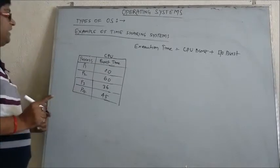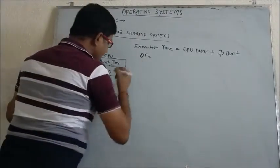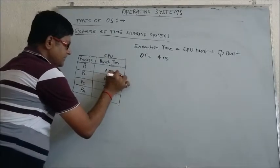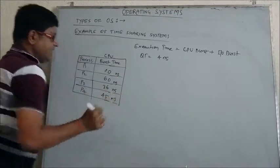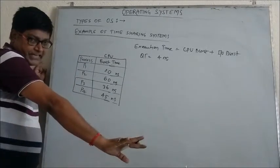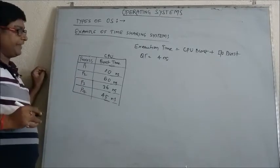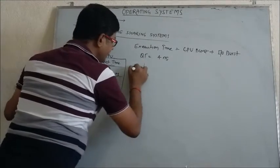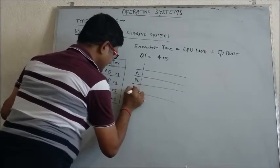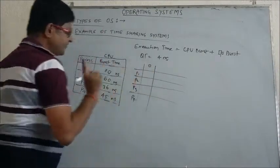In a time-sharing system, a quantum time (QT) is already given. Suppose QT is 4 nanoseconds, and all burst time values are in nanoseconds. If I am not applying any CPU scheduling, all processes will execute in FCFS manner. So let's see how the time-sharing system will behave. I am making a chart with P1, P2, P3, and P4.